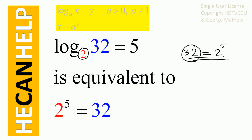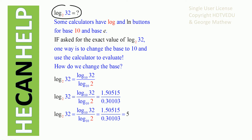So what is the base 2? What is the power 5? What is the number 32? If you want the exact value of log 32 to the base 2, one way is to change the base to 10 and use the calculator to evaluate, because we already have the LOG button. So we change it to log 32 to the base 10 divided by log 2 to the base 10. So log 32 to the base 2 is equal to log 32 to the base 10 divided by log 2 to the base 10.